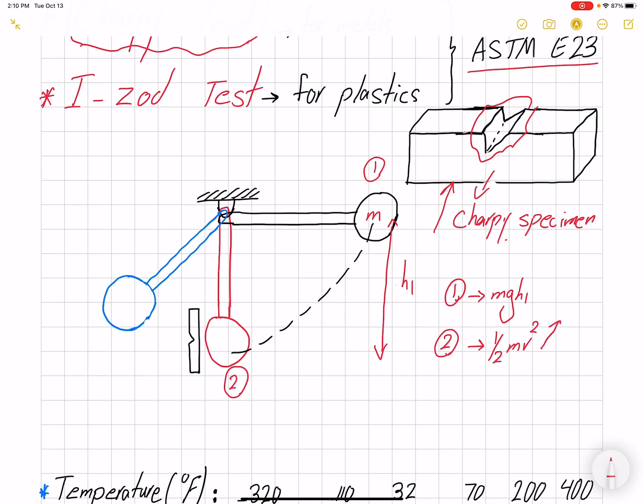Half of that energy will be spent on impact, and the other half will change to potential energy. Some energy is spent fracturing the specimen, and the rest raises the pendulum to height h2. The difference between the two heights gives us the impact energy spent.